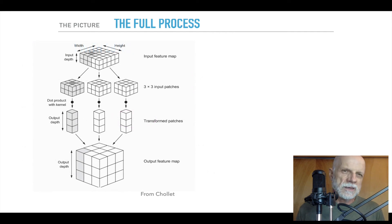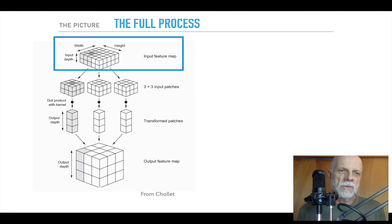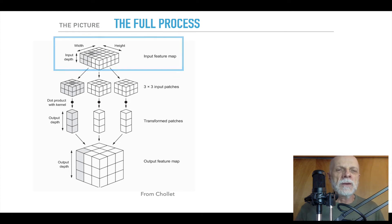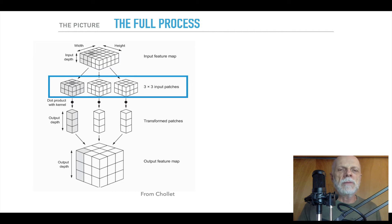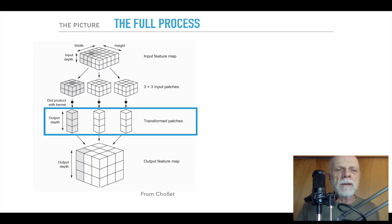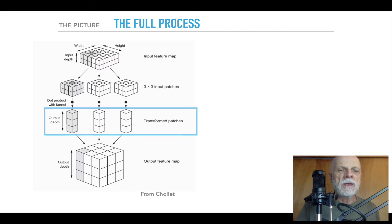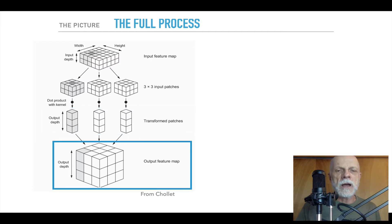It looks like this — kind of a picture with an input depth of two, with width, height, and input depth. We're only looking at small sections — in this case, the 3 by 3 input patches. So we divide that input up into little patches and create a transform, getting some output depth. In this case, the output channel is 3. Each patch creates one output depth, and then we combine them into that output feature map.